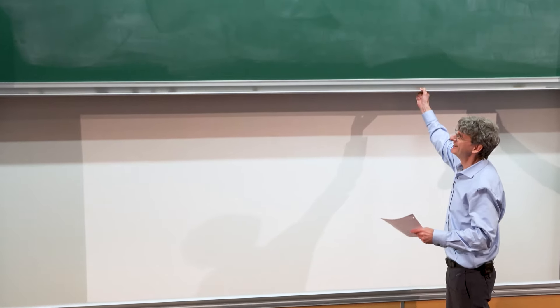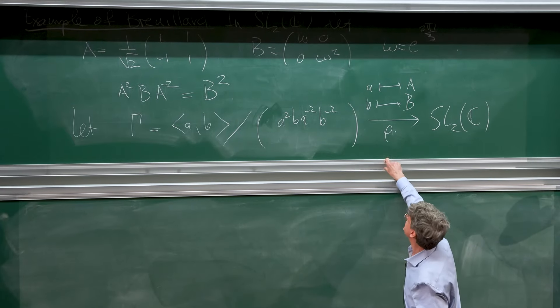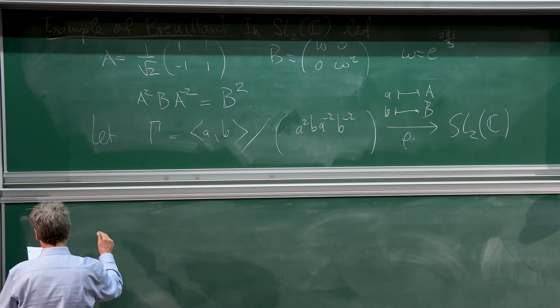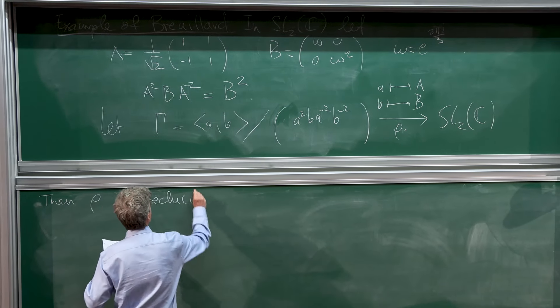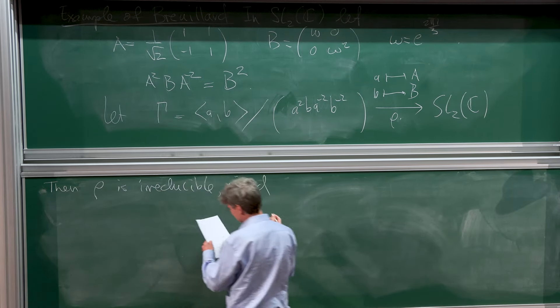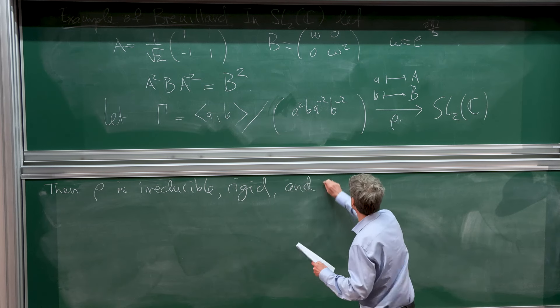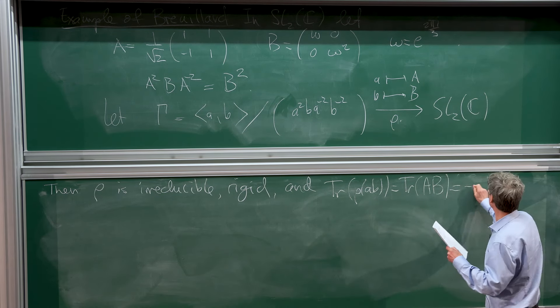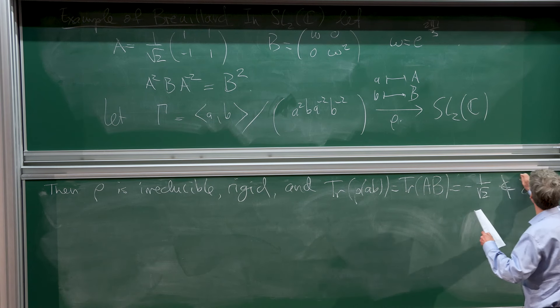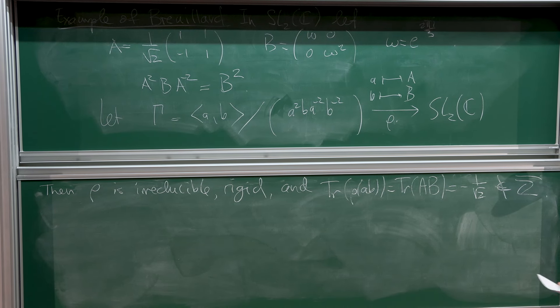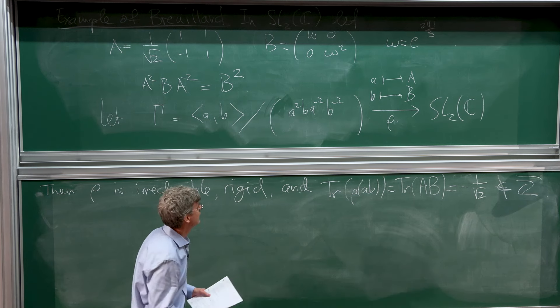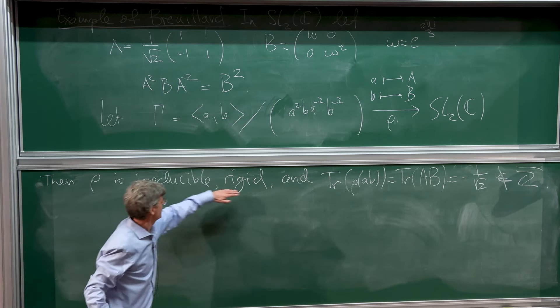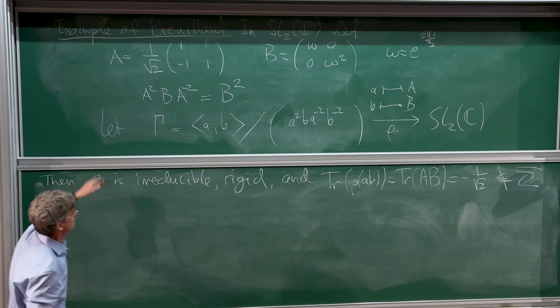Let me start with the easy part. What turns out to be true is that rho is irreducible and rigid - a term from previous talks. The trace of rho(ab), which you can compute, is 1 over square root 2, which is not an integer. In fact, more is true. All of these facts are proven by Boyard.